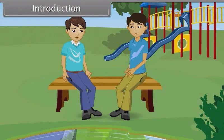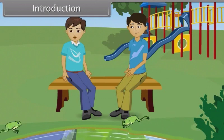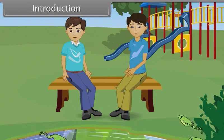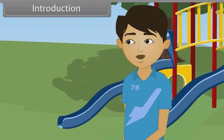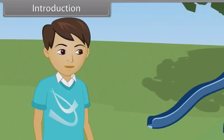The weather is still good. Deepak, look here — there are lots of frogs jumping in the water. Where do they come from? They come out during the rainy season because there is no threat of getting dried. How do they breathe?